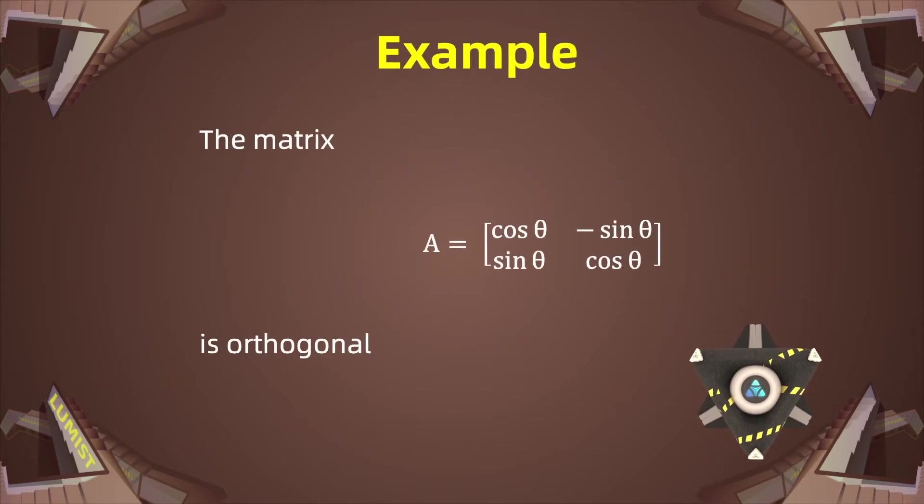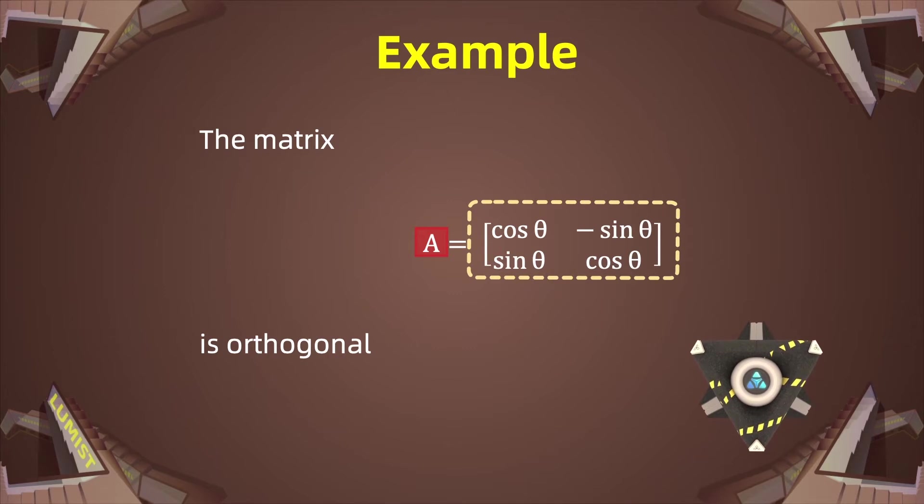And here we have our first example. Recall that the standard matrix for the counterclockwise rotation of R2 through an angle theta is given by this matrix A. It is a two by two matrix. Its entries are by rows cosine of theta, minus sine of theta, sine of theta, and cosine of theta. This matrix is orthogonal.